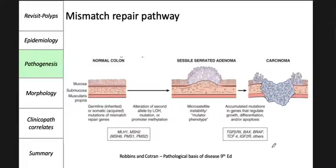The mismatch repair pathway involves defects in mismatch repair genes like MLH1, MSH2, MSH6, PMS1, and PMS2. These result in microsatellite instability and permit accumulation of mutations in numerous genes. If these mutations affect genes involved in cell survival and proliferation, cancer may develop. Over a period of time, different mutations accumulate, a tumor develops into an adenoma, and eventually leads to carcinoma.